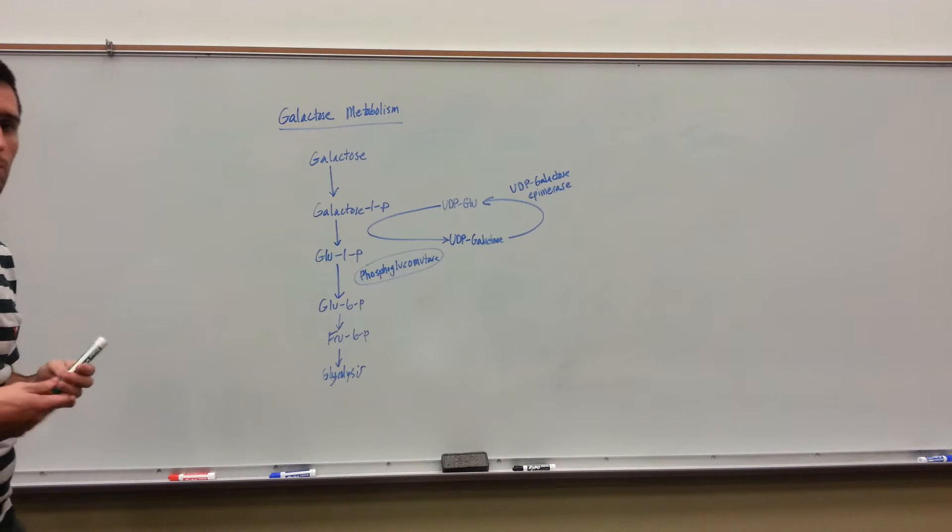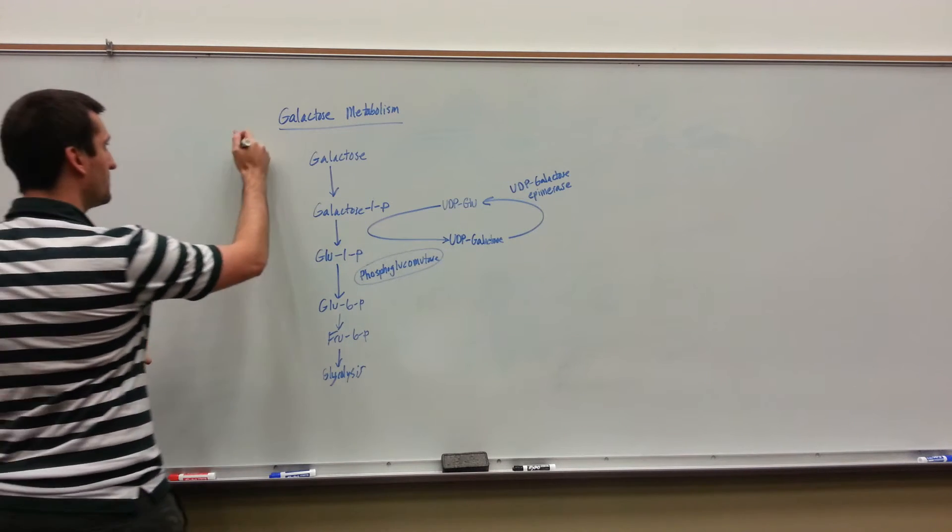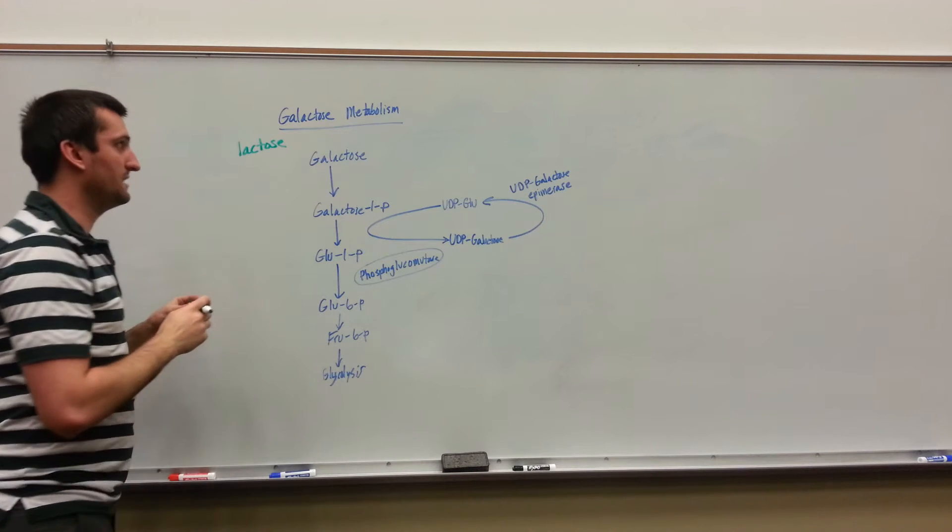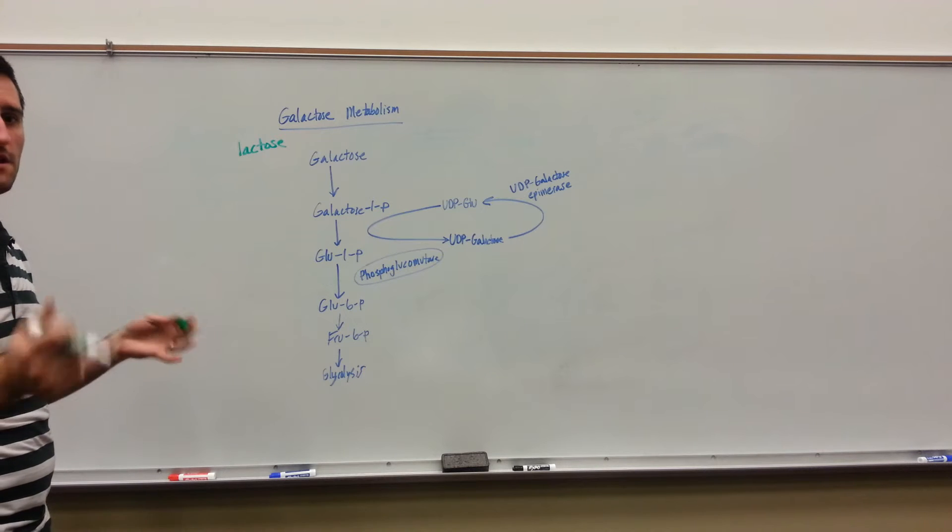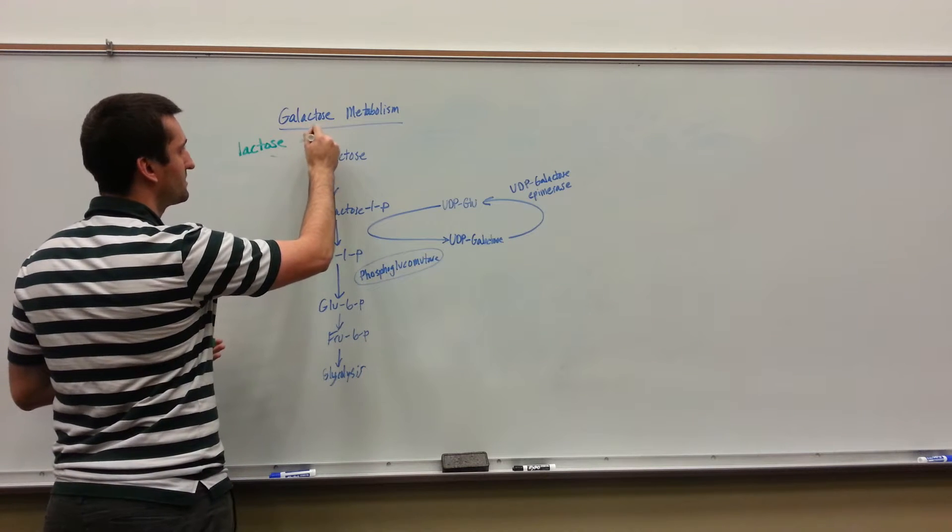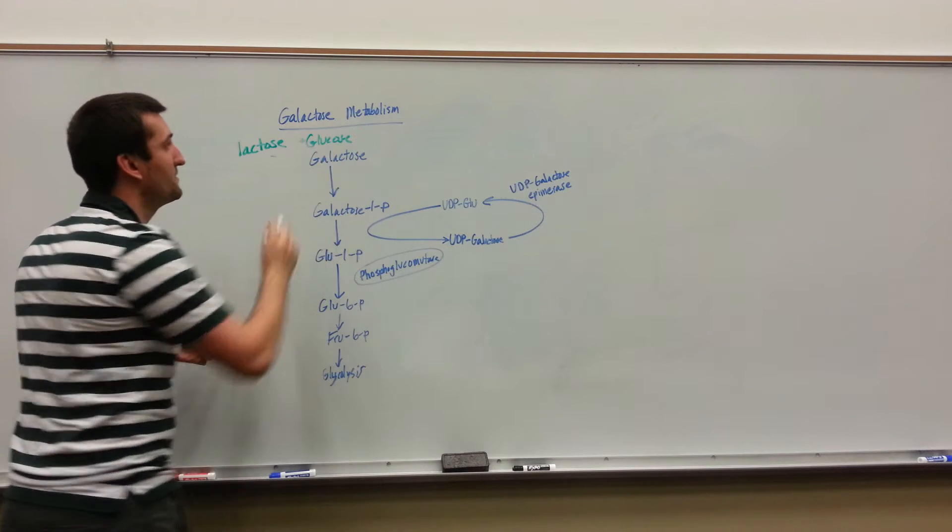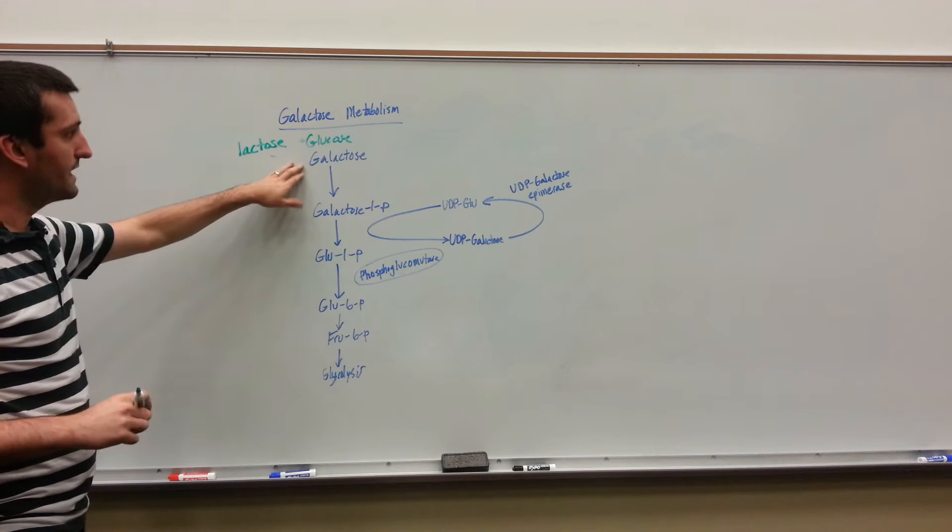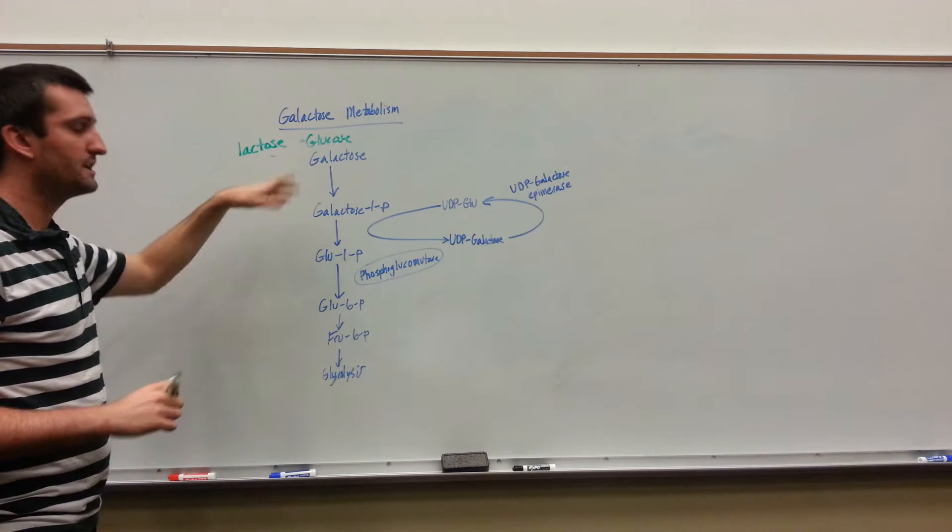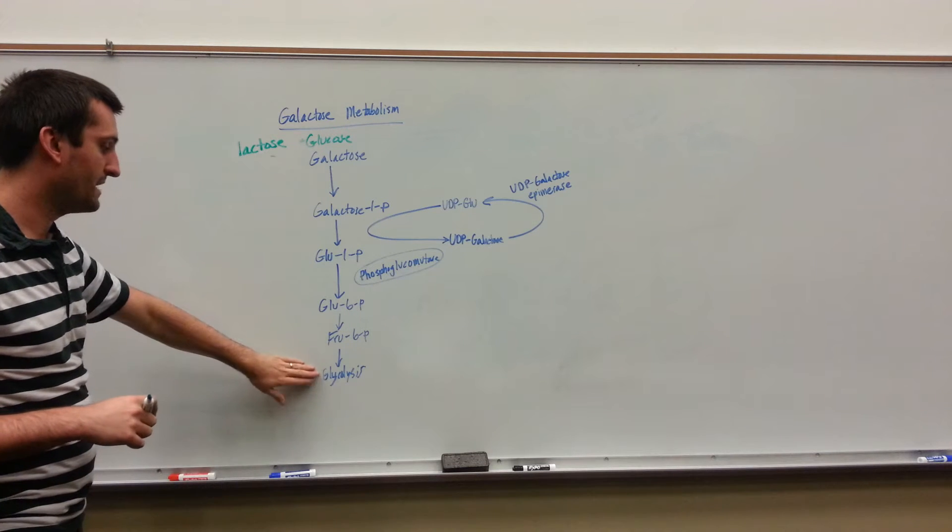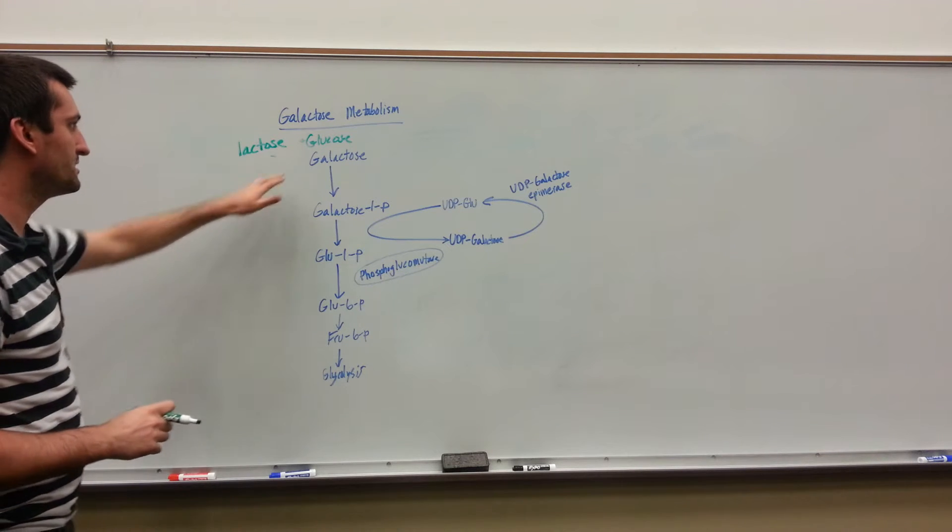We have a galactose molecule, probably from a lactose molecule that gets broken down into galactose plus glucose. This glucose molecule is going to be broken down via glycolysis. This galactose molecule should, in a typical person, get broken down and eventually spit back into glycolysis.